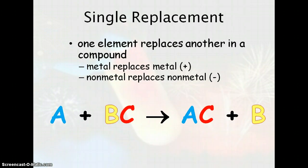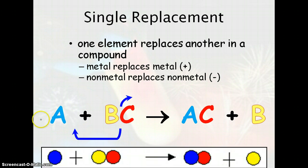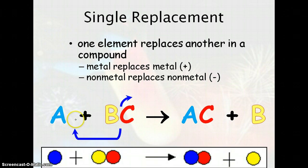Single replacement is when one element replaces another in a compound. If you have a metal by itself, it replaces the metal in the compound or the positive one. If you have a non-metal by itself, it replaces the non-metal or the negative one. In this instance, A comes in, kicks out B, so now A and C are together and B is by itself.